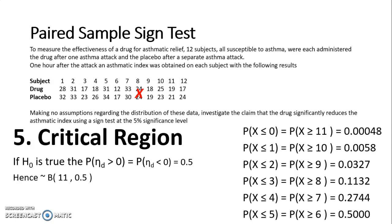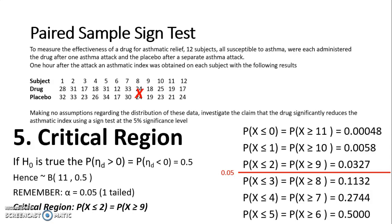My critical value, sorry, my significance level for this question was 5%, 0.05. So my critical region will be any probabilities that have a value less than 0.05. So looking at those probabilities on the right hand side, I can see that 0.05 is somewhere in between 0.0327 and 0.1132. So my critical region is anything less than or equal to 2 or anything greater than or equal to 9.